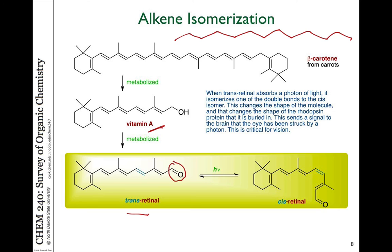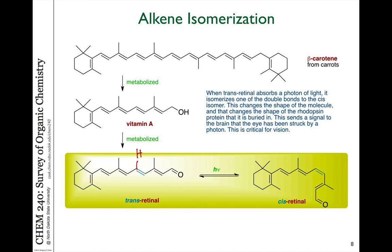Retinal has an aldehyde functionality at the end, but what is important is that it's embedded in a protein in the retina of your eyeball. One particular double bond, when it absorbs a photon of light, isomerizes from the trans isomer — with the groups on opposite sides, as I'll draw the hydrogens in for clarity — to the cis isomer. When we produce cis-retinal, that causes a bending or kinking in that molecule, which affects the structure of the protein it's bound in. That triggers a signaling pathway which tells your brain that light has been absorbed. So this cis-trans isomerization is very critical for our ability to see.